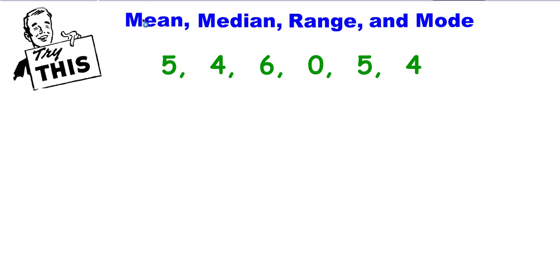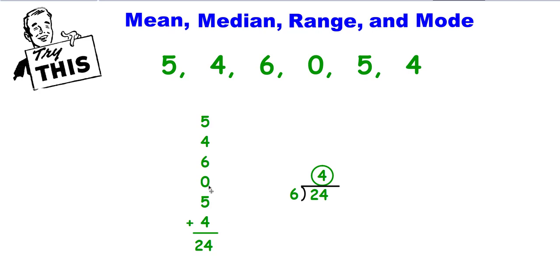To find the mean of the set of numbers, you add the numbers up including the zero. Together they equal 24 — that's the sum. You take the sum and divide it by how many numbers you added together, and you have the mean of 4.